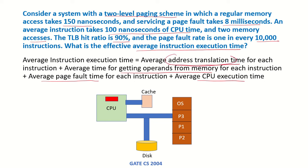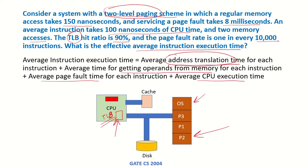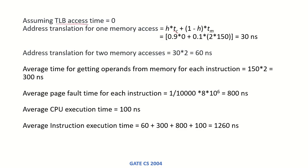First comes the address translation time. Whenever an instruction is fetched, its address must be translated using the TLB. If the page table entry is found in the TLB, it's a hit and translation is done in the TLB itself; otherwise we must access the page table in memory. Since it is a two-level paging scheme, a TLB miss requires two memory accesses for address translation. We assume TLB access time is 0 as it is not given.